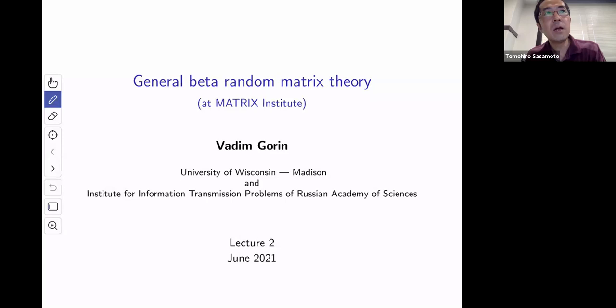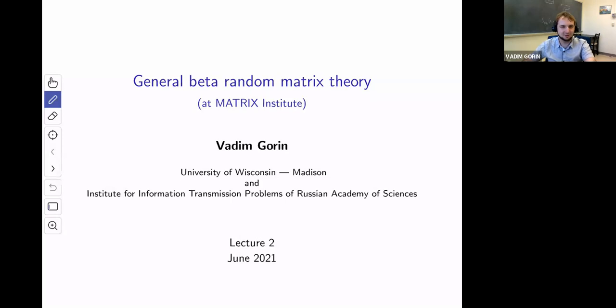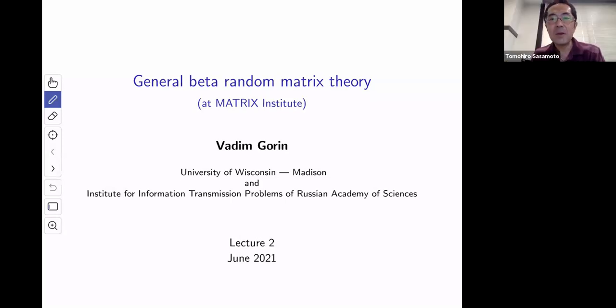Let's start the first session of the second day of this program. First we have a second lecture by Vadim, who is going to talk about general beta random matrix theory. On the website there are lecture notes for the second lecture and also a problem set, and we have already put up the video for the first lecture, so if you want to review the first part you can do that afterwards.